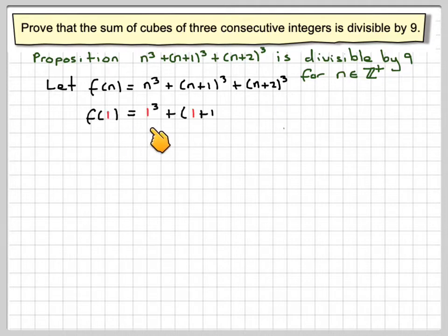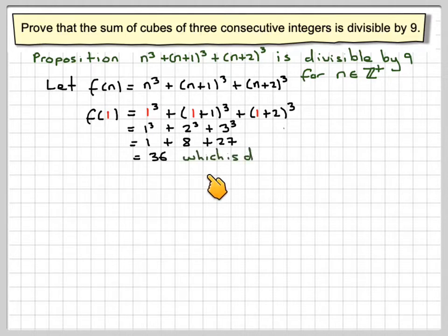Then f of 1, we need to prove it for a particular value, will be 1 cubed plus 1 plus 1 cubed plus 1 plus 2 cubed, which is 1 cubed plus 2 cubed plus 3 cubed, which is 1 plus 8 plus 27, which gives 36, which is divisible by 9. 9 goes into that 4 times.